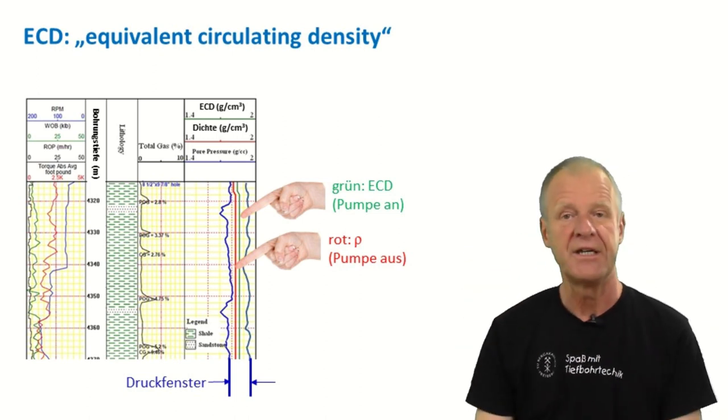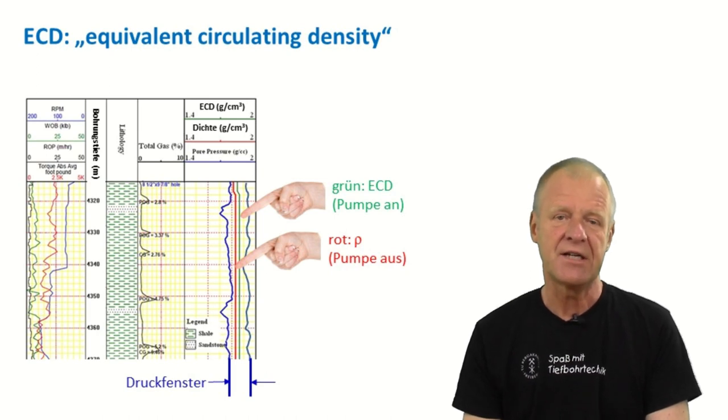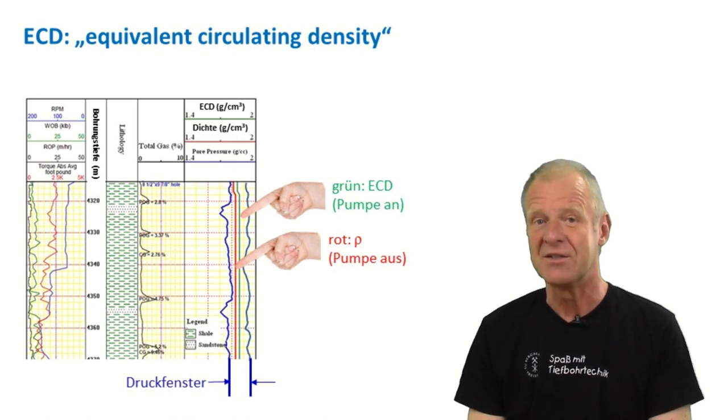So in summary, we could see that the ECD value is a very important variable and has to be kept under control. But it is not so easy to explain. I hope you could really follow the explanation.